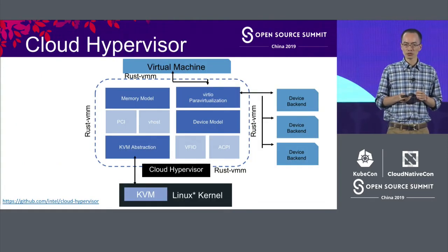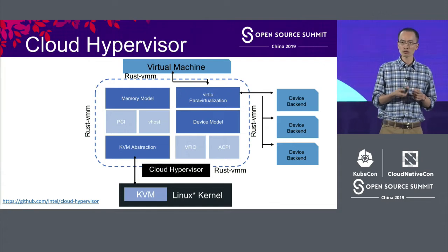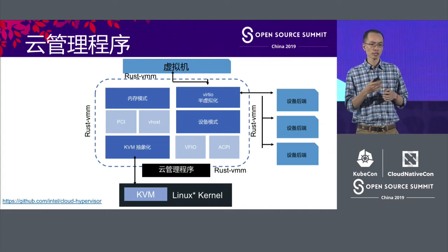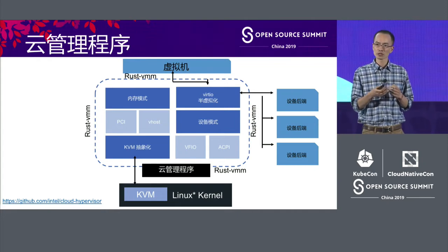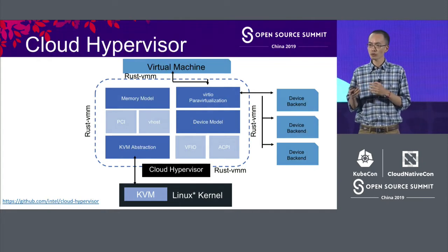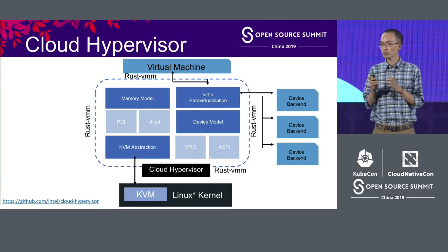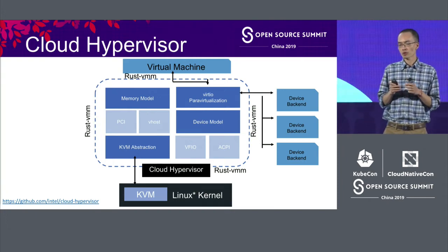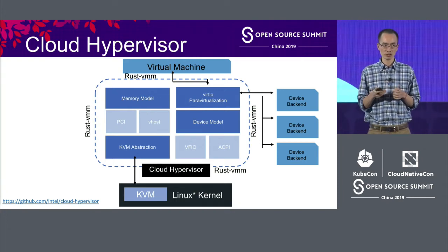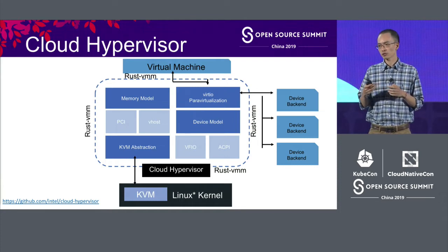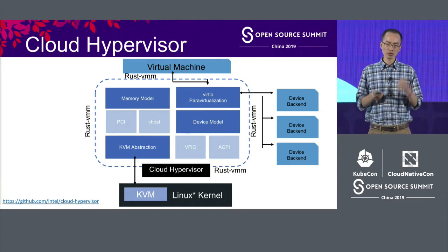I would like to give an example of how to use Rust-VMM to build a modern cloud hypervisor. When I say modern, it means the target is for modern cloud applications on recent hardware. For example, we don't care about legacy devices. The end goal is to reduce the emulation complexity, thus providing a much smaller attack surface compared to existing VMMs such as QEMU. Of course, it also needs to provide high performance and low latency.